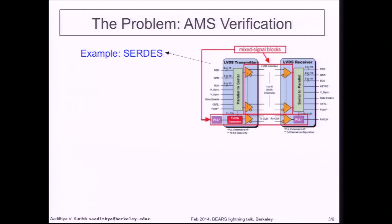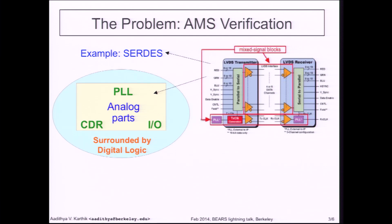Here is a quick example of a chip that is used in communication systems. This is called a CERTIS chip. Virtually any chip today consists of analog parts as well as digital components. For example, the analog parts could take care of things like clock and data recovery, input-output specifications, IO modules, analog-to-digital conversion, digital-to-analog conversion, and so on. In addition to these analog components, we also have a large amount of digital logic, and together these two parts work together to realize the functionality of the chip.